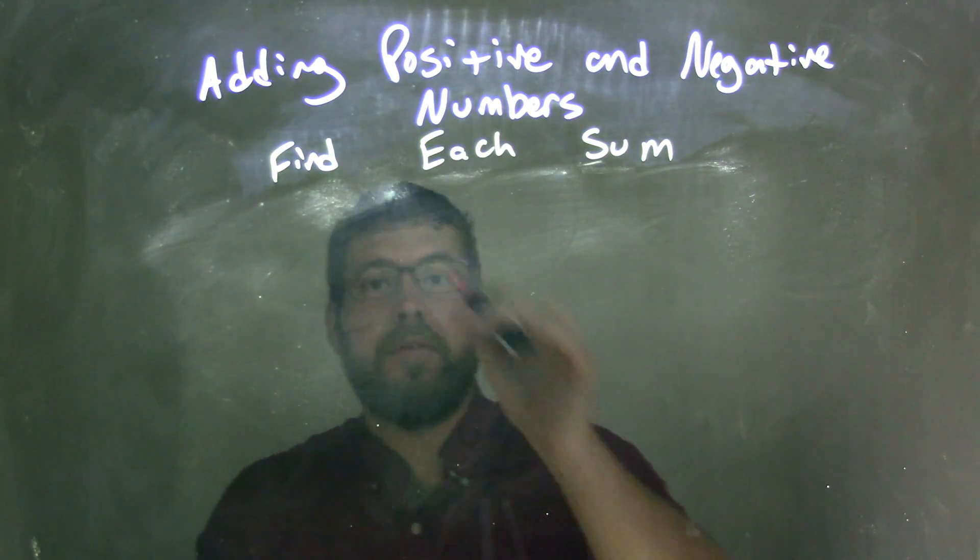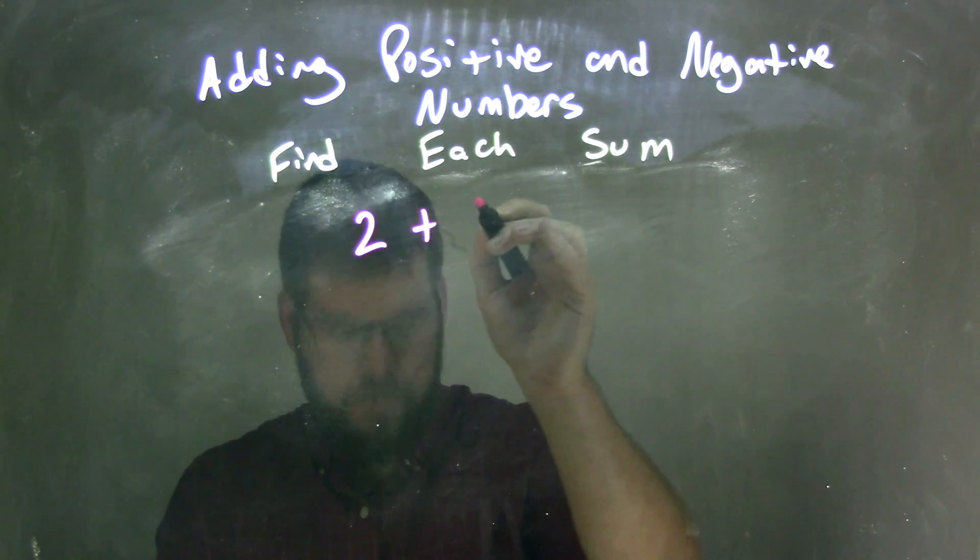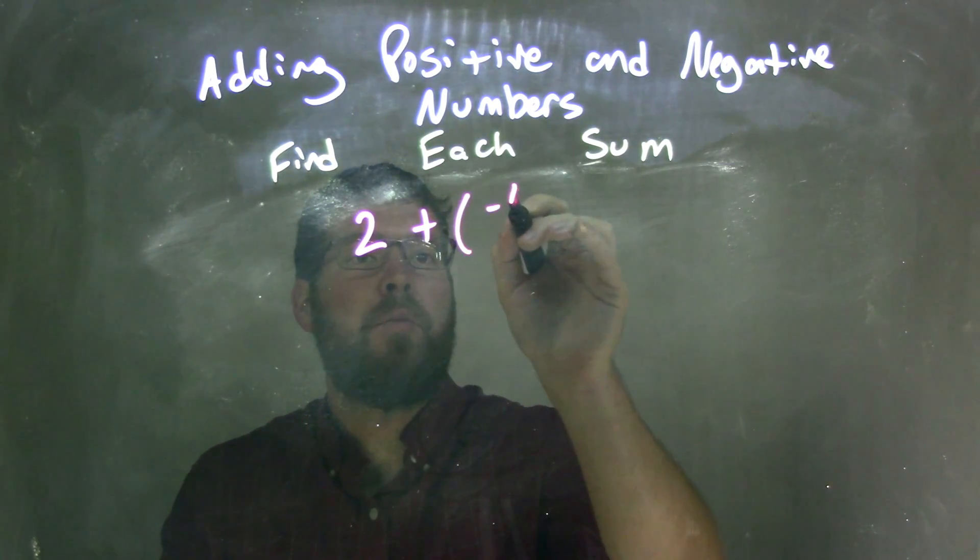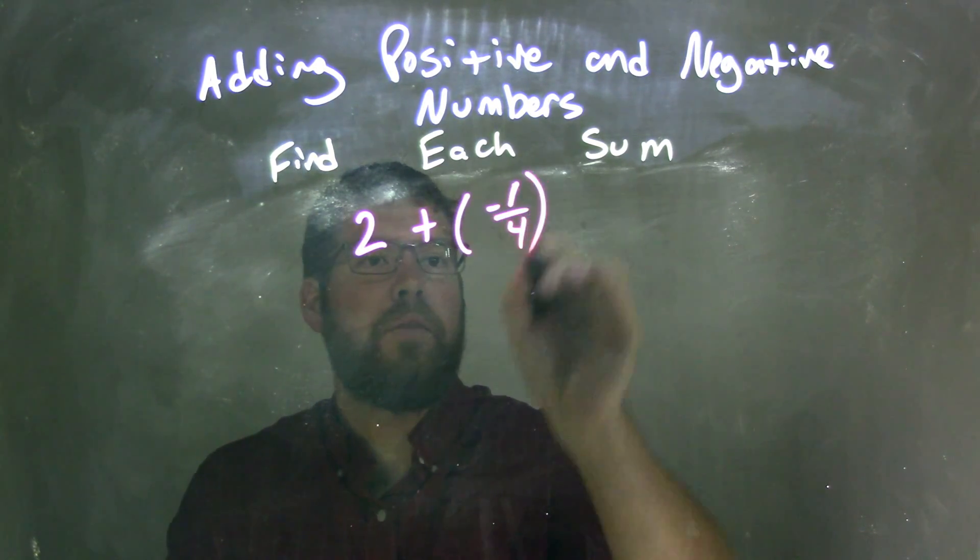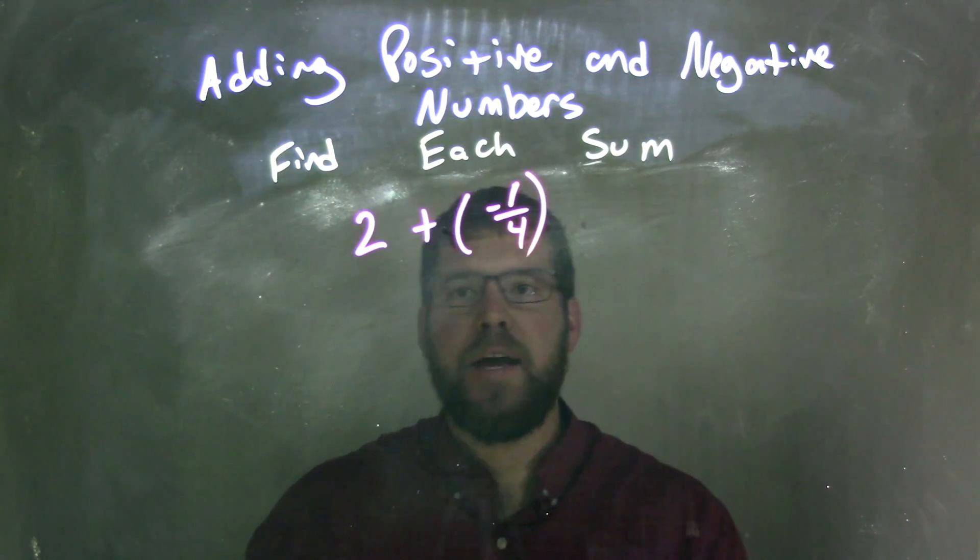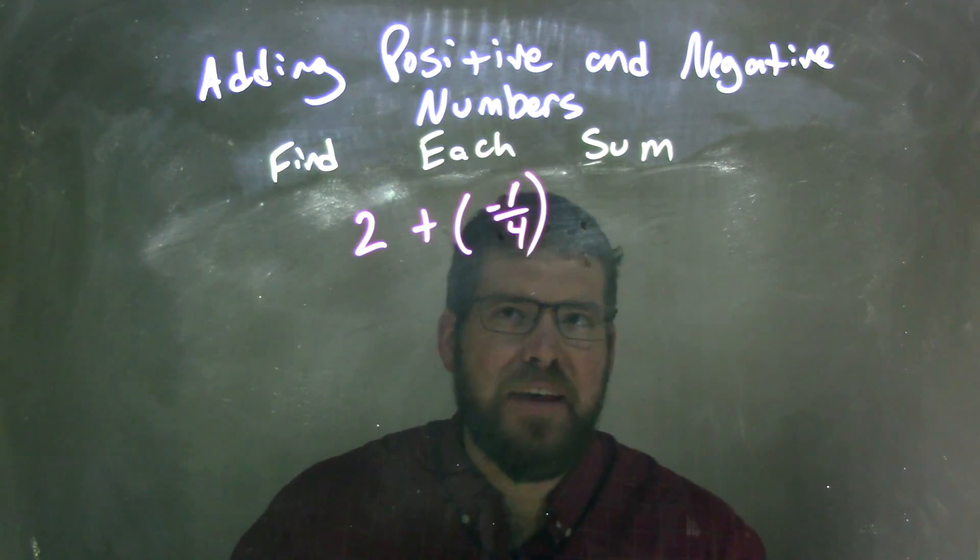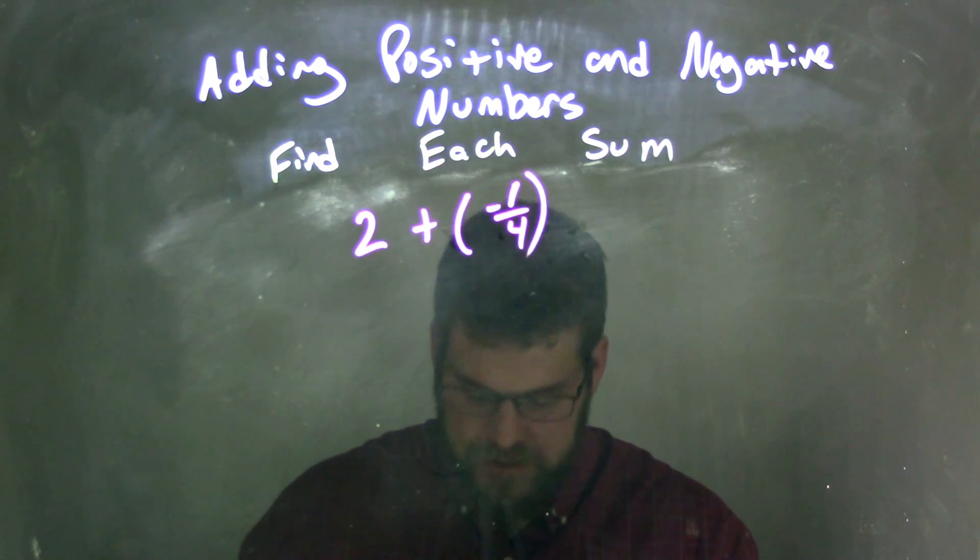So if I was given this expression, 2 plus a negative 1 fourth, and I want to add them together, well if I have 2 plus a negative 1 fourth, I need to have the same base when I add fractions together.